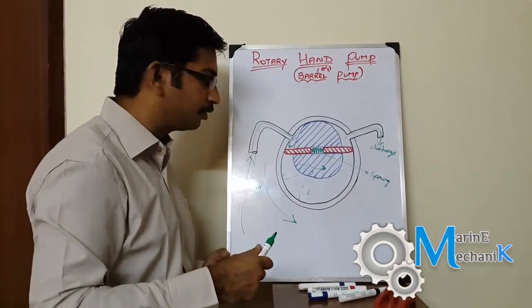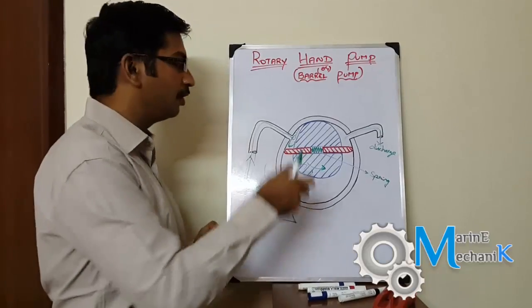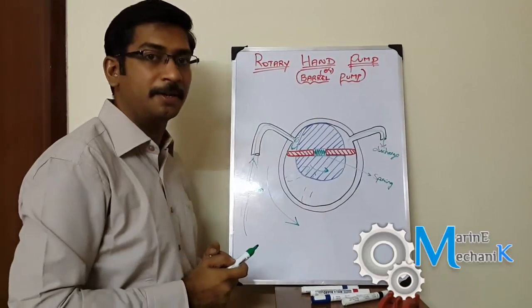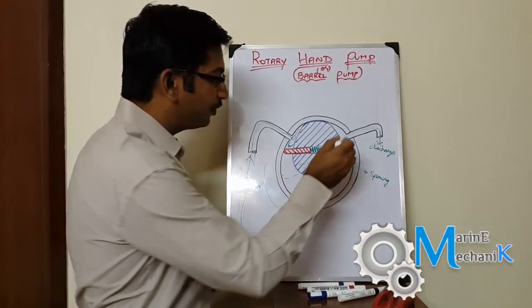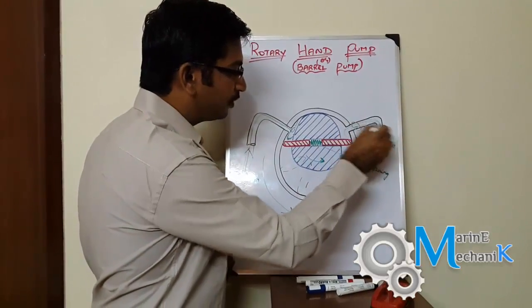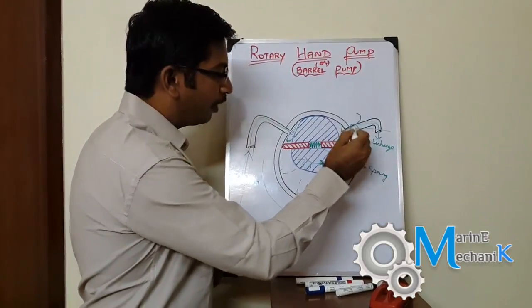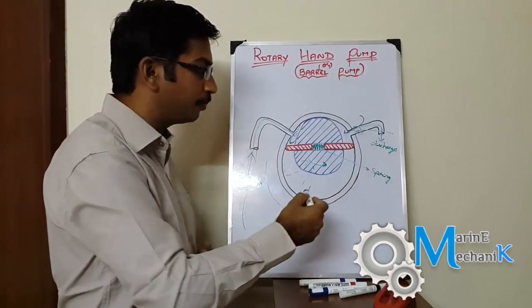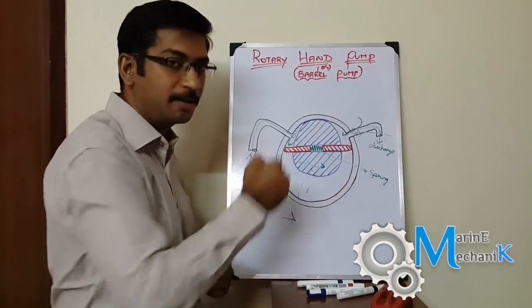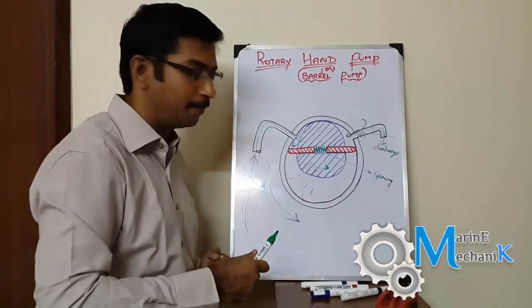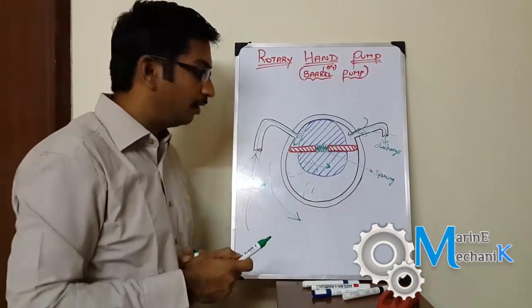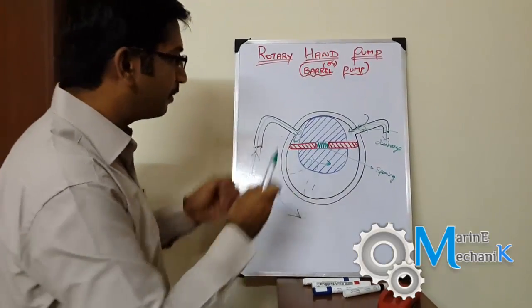So it is not able to pump out air enough, which means it is not self-priming. In that scenario, what you need to do is just remove this connection and pour some oil or water, whichever you are going to pump, to prime this area completely and then start pumping. This will work.